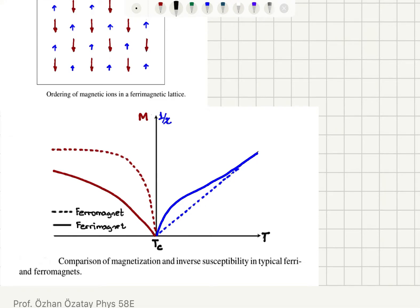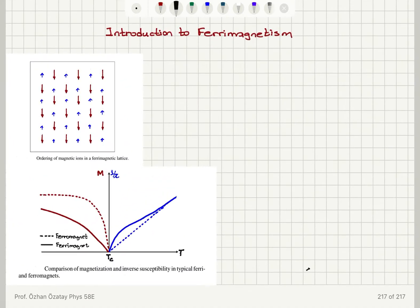Below Tc, magnetization drops not as fast as ferromagnets in ferrimagnets. So that's the main difference between the two. Okay, so let's list what we just said.